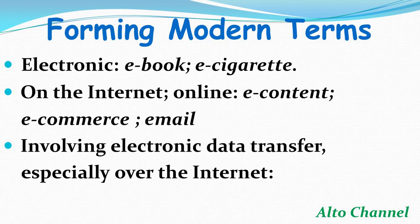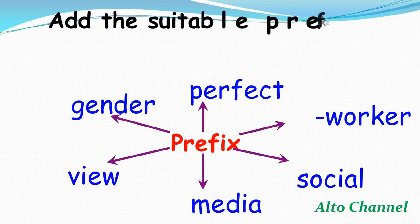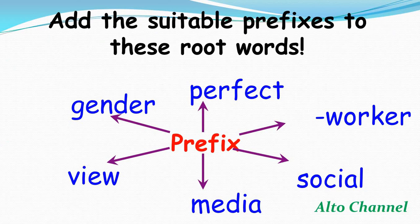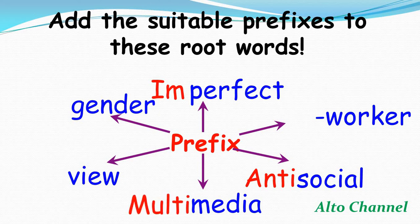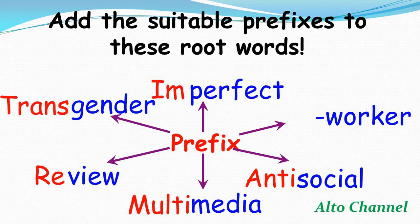Now we are going to see some practice on how to use prefixes. The first one is 'perfect' — the suitable prefix gives us 'imperfect'. The second one is 'social' — the most used prefix gives us 'anti-social'. The third one is 'media' — the prefix gives us 'multimedia'. And then 'view' — the most used prefix gives us 'review'. And then the last one is 'worker' — the most used prefix gives us 'co-worker'.